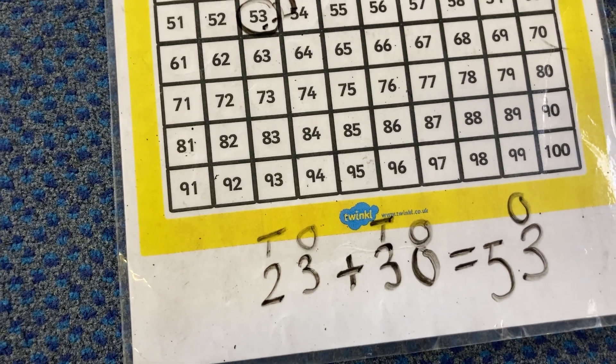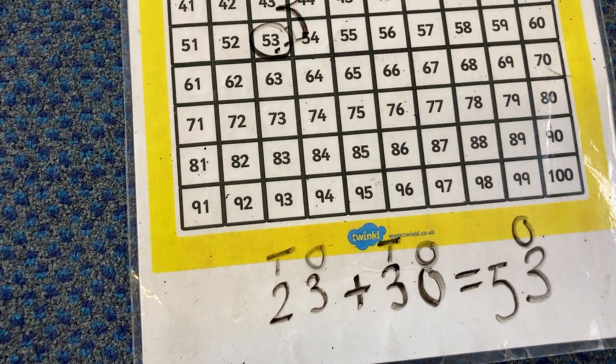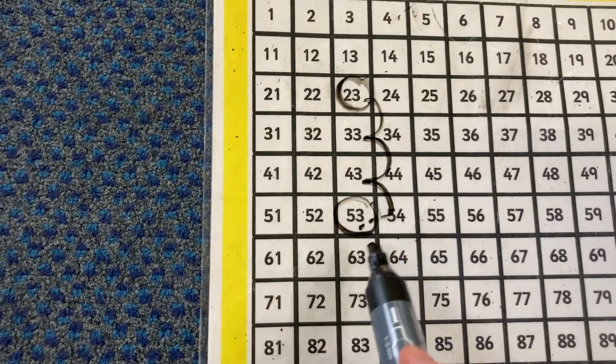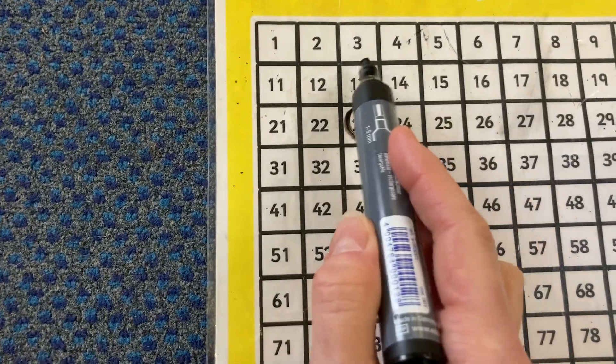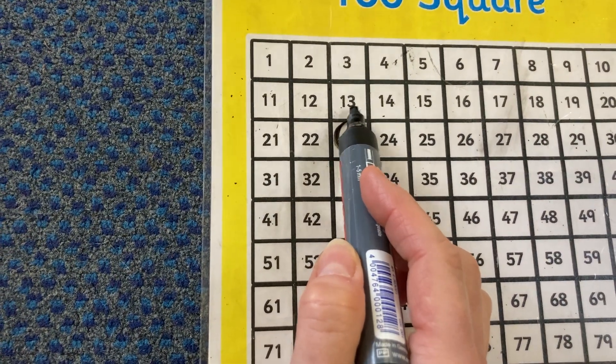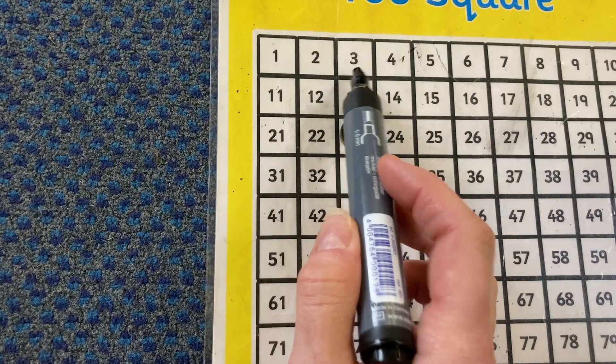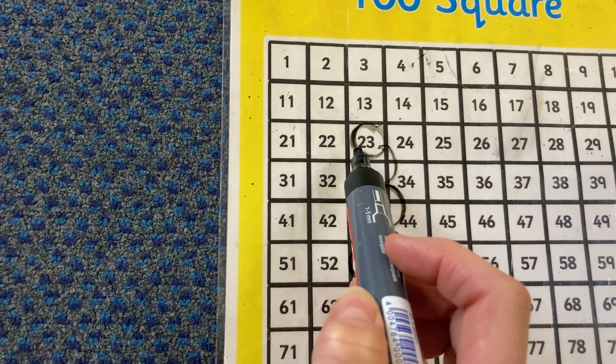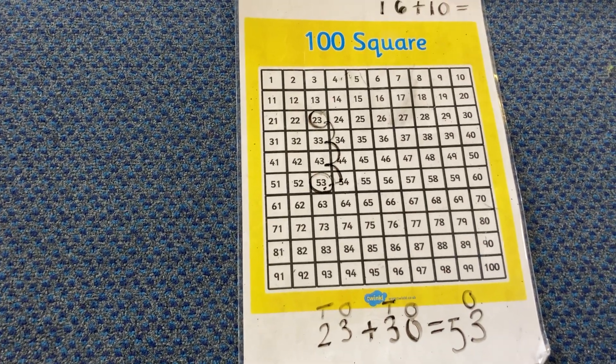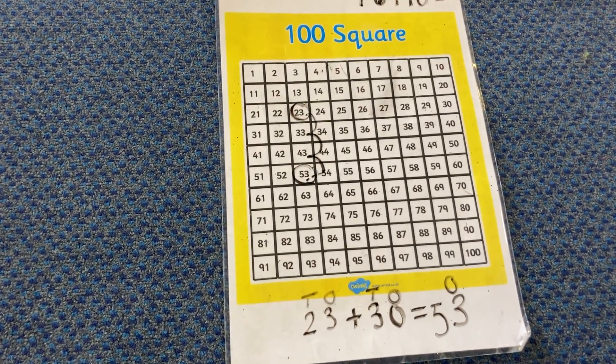Okay. The same if we are subtracting, instead of coming down the number square, we're going to go back up the number square, taking away. But the ones, again, if we're taking away, the ones isn't changing, it's the tens that's changing. Hopefully that will help you with using your number square with your adding this week.